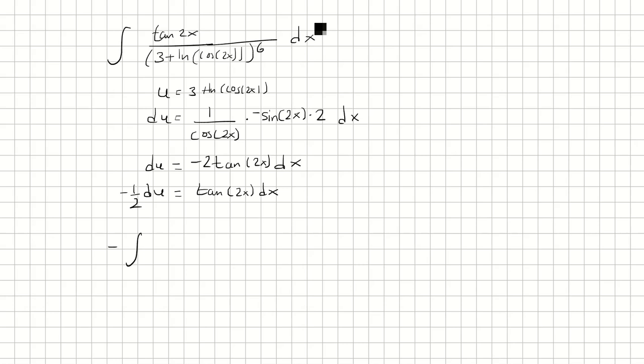And so the negative 1 half, I can just factor that outside. We have du on the top and then u to the 6th on the bottom, which this can be rewritten as u to the negative 6 du.